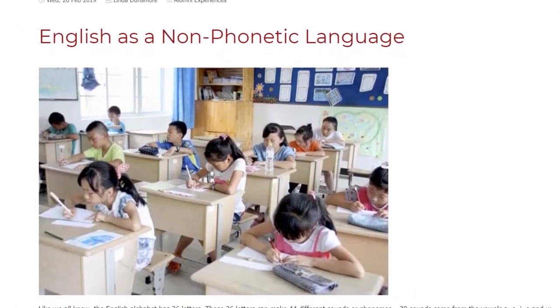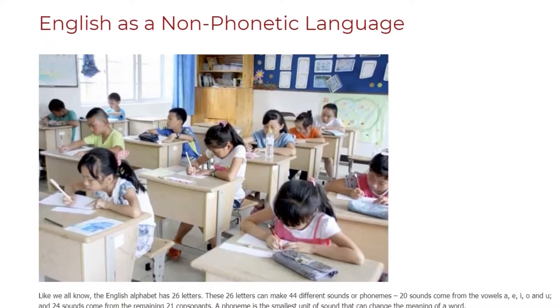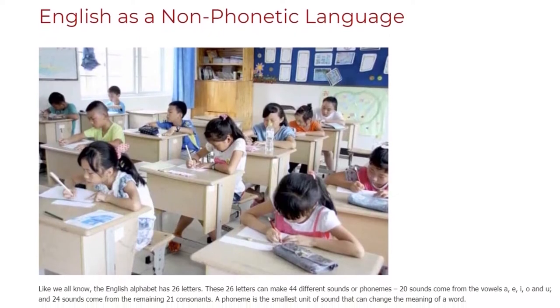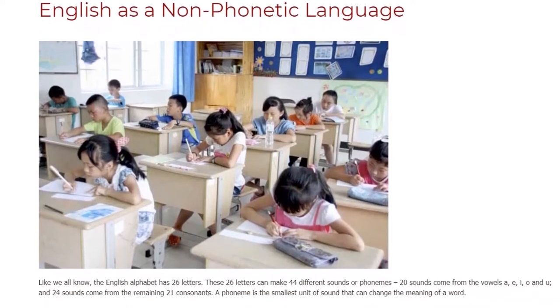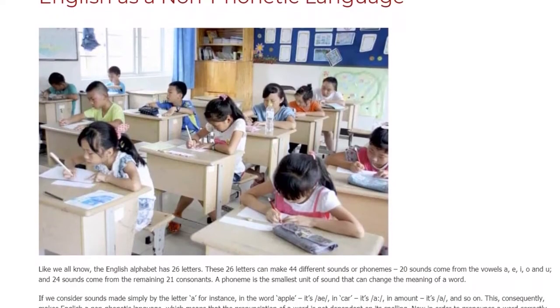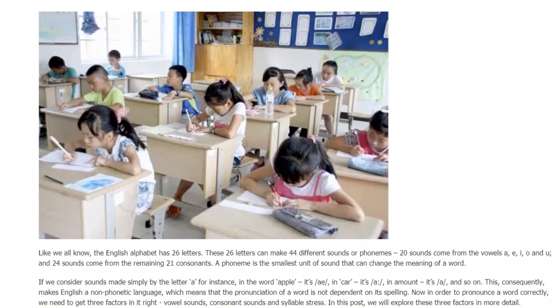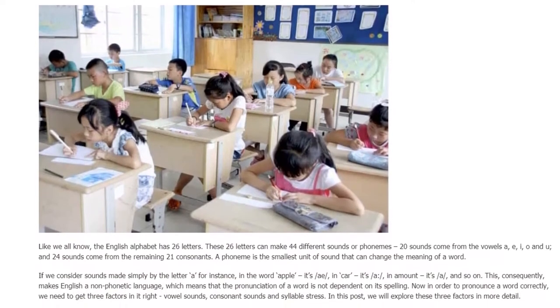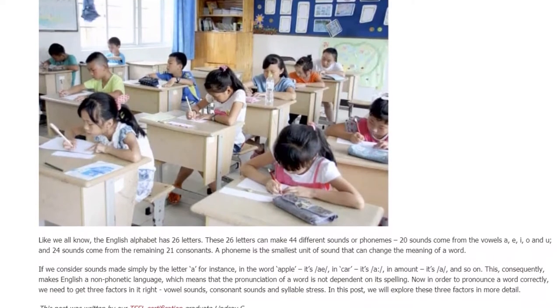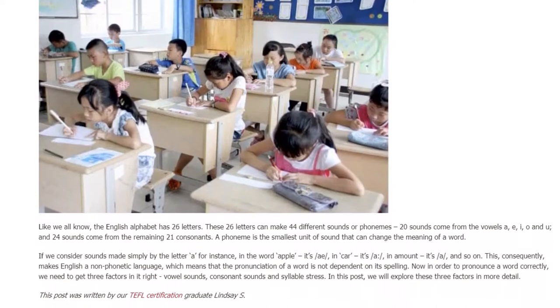English as a Non-Phonetic Language. Like we all know, the English alphabet has 26 letters. These 26 letters can make 44 different sounds or phonemes - 20 sounds come from the vowels a, e, i, o and u, and 24 sounds come from the remaining 21 consonants. A phoneme is the smallest unit of sound that can change the meaning of a word.